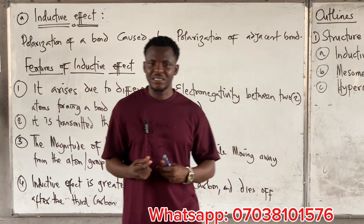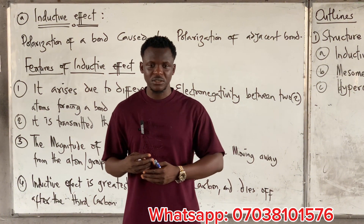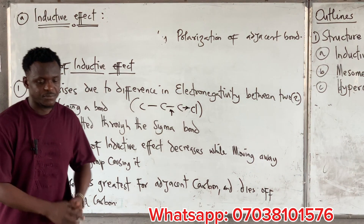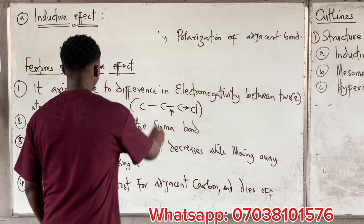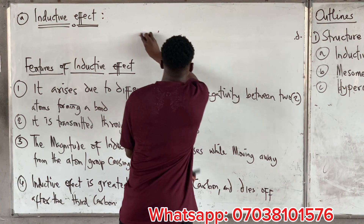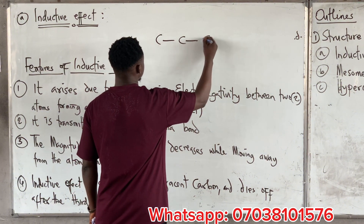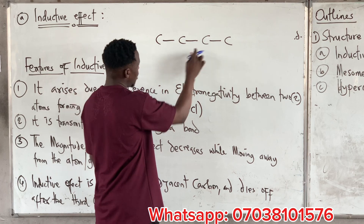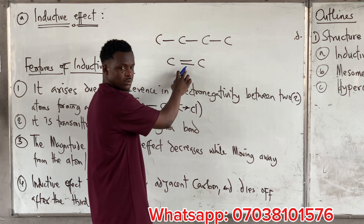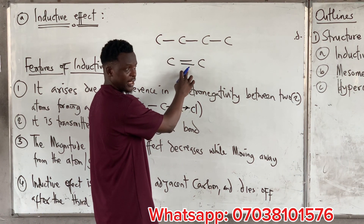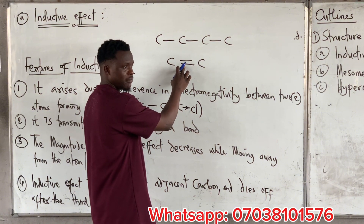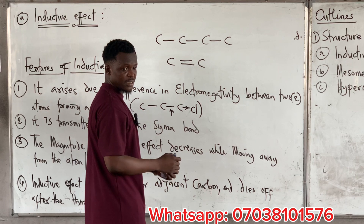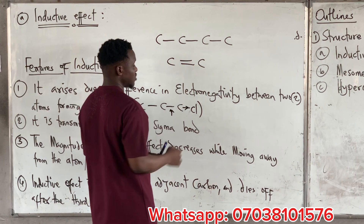Now let's look at types of inductive effects. Inductive effects can be negative inductive or positive inductive. Also note that all single bonds in a compound are sigma bonds. Inductive effect is highly transmitted in a single bond. A double bond contains one sigma and one pi bond — inductive effect is mostly transmitted through the sigma component, while mesomeric effect is transmitted through the pi bond.